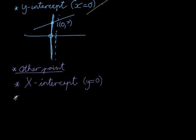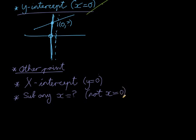Another way we can do it is we just substitute any x equal to something, but not x equal to 0, because we've already substituted x equal to 0 for our first point. So we can just choose any other point, substitute it in for x, and find a value for y. Then we'll have another coordinate.